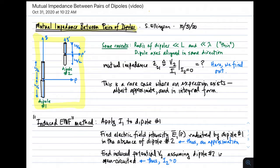We're indicating mutual impedance as the quantity Z sub 21, which is the voltage V2 appearing on the terminals of the second dipole in response to current I1 applied to the first dipole, specifically where the current on the second dipole is zero. In other words, the second dipole is open circuited.